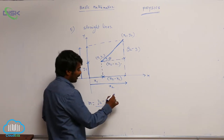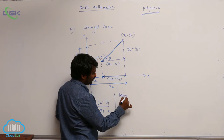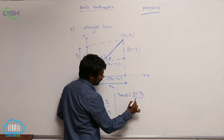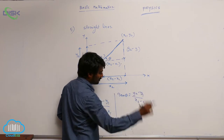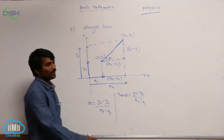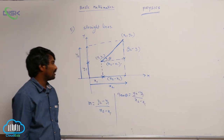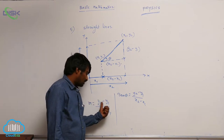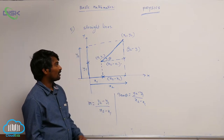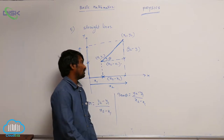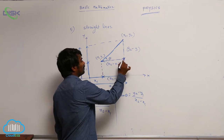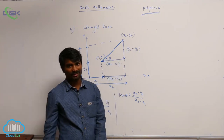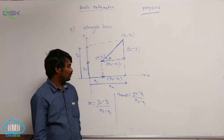So I am writing: tan theta is equal to y2 minus y1 by x2 minus x1. That means instead of writing this formula and substitution, what I do is I will just calculate the edge lengths and the tan theta value. That will give you the slope.